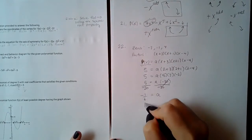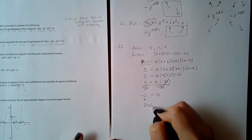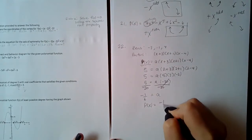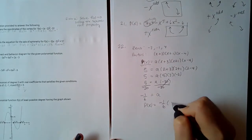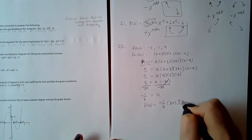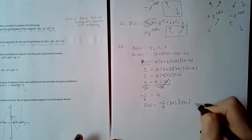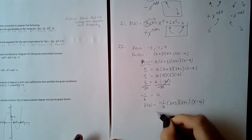So the polynomial is −(1/6)(x + 3)(x + 1)(x − 4).